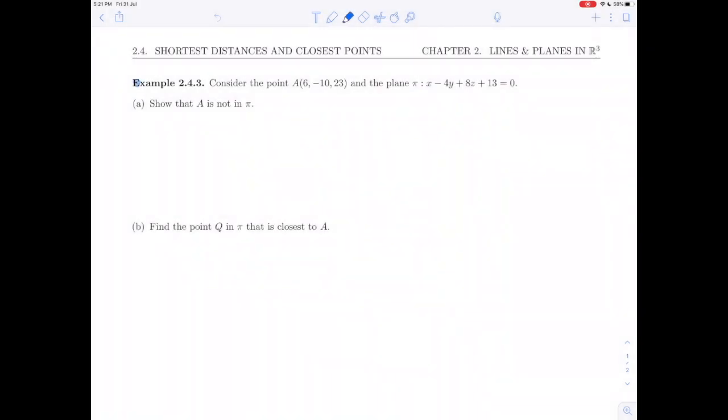This video is going to cover example 2.4.3, which is about the distance from a point to a plane, part of section 2.4: shortest distances and closest points. We are given a point A which is (6, -10, 23) and the plane π: x - 4y + 8z + 13 = 0. We are asked to show first of all that A is not in π.